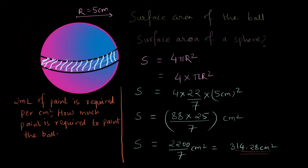after finding out the total surface area, we can find the total paint required by multiplying the total surface area that we have in centimeter square times 2 ml per centimeter square which gives us 628.57 ml. So 628.57 ml of paint will be required to paint the ball completely.